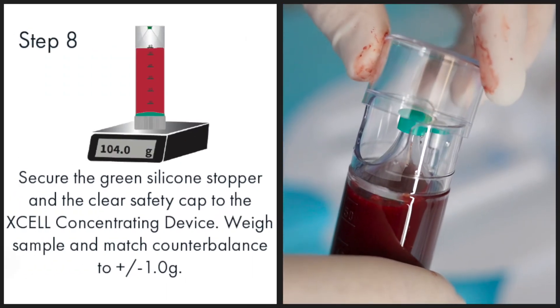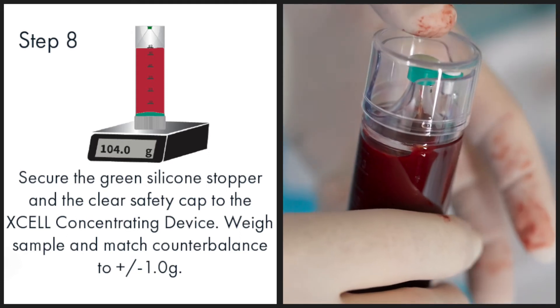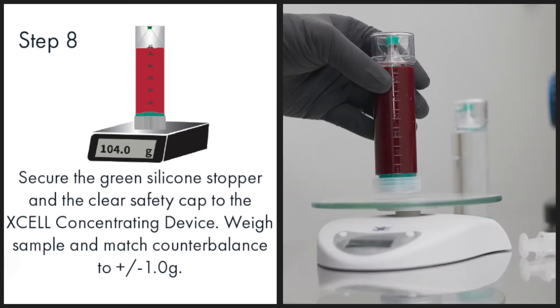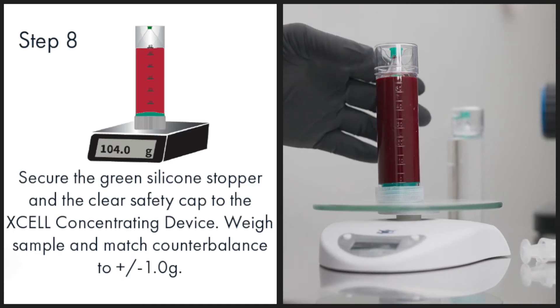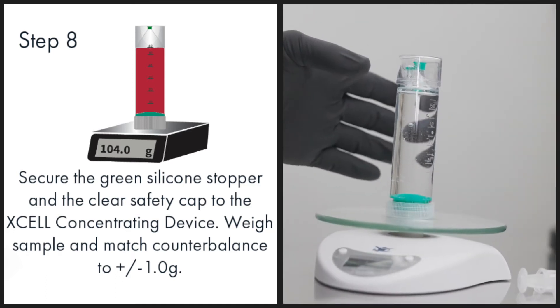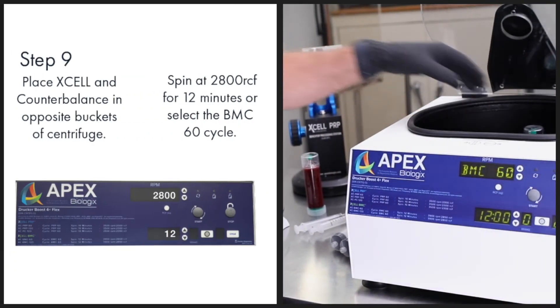Secure the green silicone stopper and the clear safety cap to the XL concentrating device. Weigh the sample and match the counterbalance within one gram. Place the XL concentrating device and counterbalance into opposite buckets on the centrifuge.